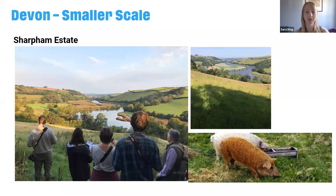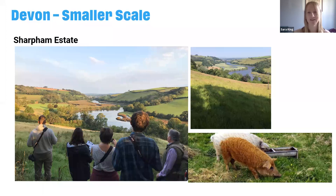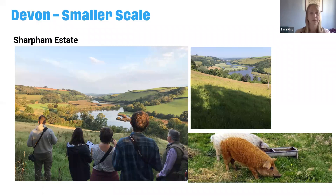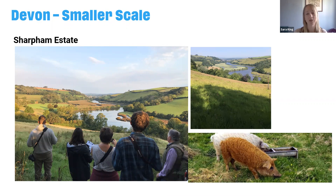Looking at smaller scale: Sharpham Estate in Devon has brought in woolly pigs — a couple of pigs within one area for 21 days, creating disturbance and kickstarting natural processes. They don't have enough space for the pigs year-round, so they've moved on to another site, and the project can now observe the impact and see natural succession and natural processes coming through. Sharpham also does a lot of work engaging people and training young people — a really exciting project showing you can rewild at smaller scales. They're also looking to help develop a Devon Rewilding Network.